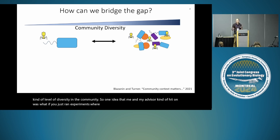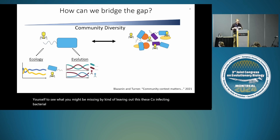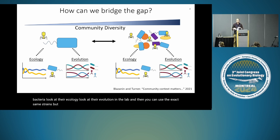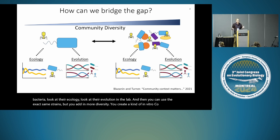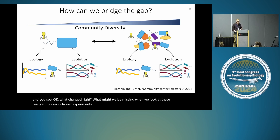How can we bridge that gap — that gap of community diversity? One idea that me and my advisor hit on was: what if you ran experiments where you manipulated that diversity yourself to see what you might be missing by leaving out co-infecting bacterial pathogens? You could do your classic experiment with one phage and one bacteria, look at their ecology and evolution in the lab, and then use the exact same strains but add in more diversity — creating an in vitro co-infection and seeing what changed.